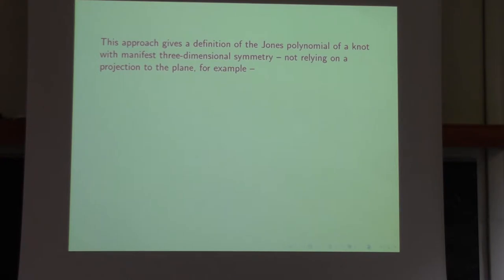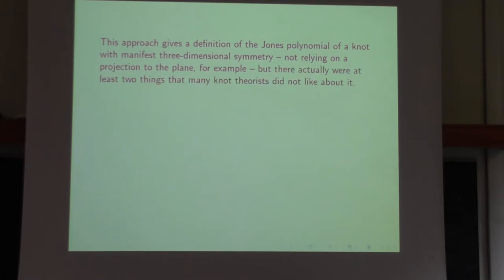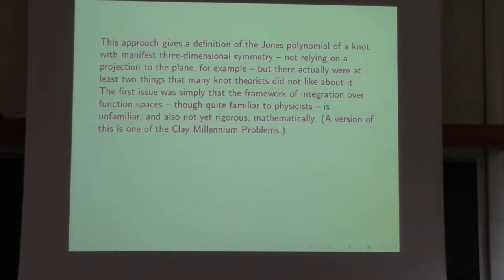To understand the Jones polynomial this way, we need a link between three-dimensional gauge theory and two-dimensional conformal field theory. This approach gives a definition of the Jones polynomial with manifest three-dimensional symmetry, not relying on a projection to the plane. But there were at least two things that many mathematicians did not like. One was simply that the framework of integration over function spaces, although familiar to physicists, is unfamiliar and not yet rigorous mathematically. Improving that situation is actually one of the Clay Millennium Problems.